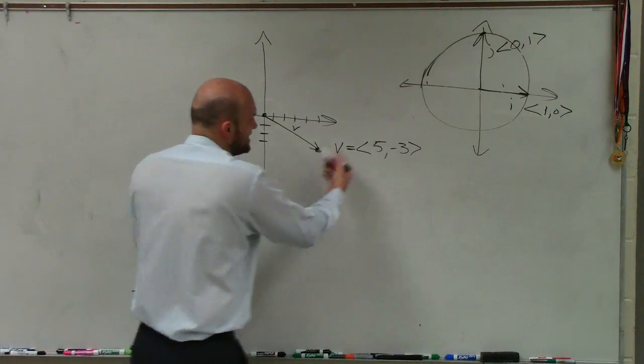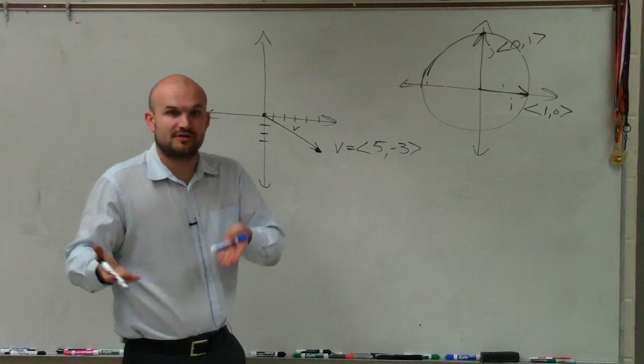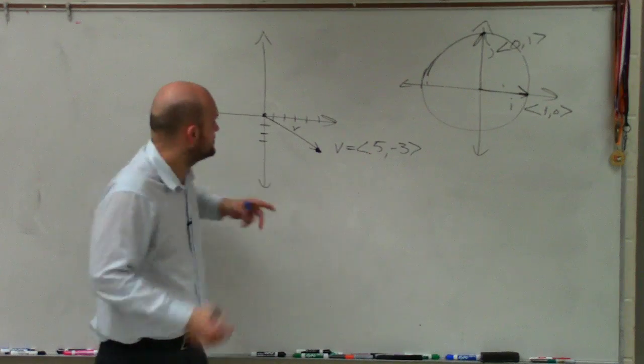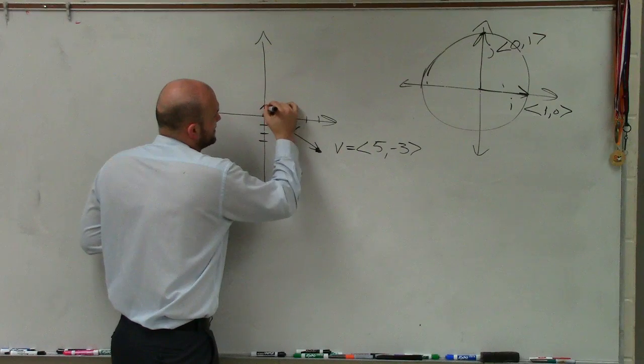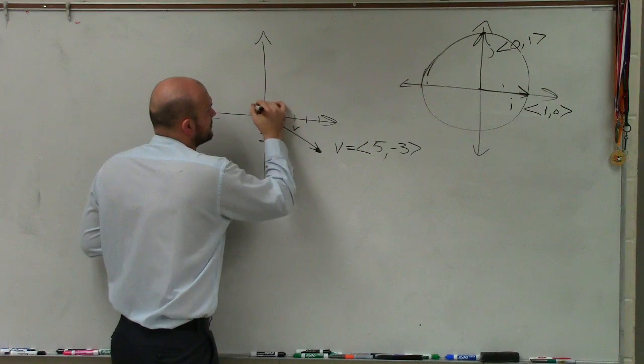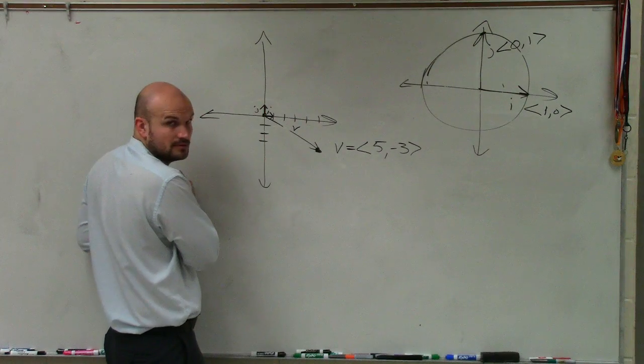So another way that we can label this vector v is the sum of our unit vectors. So v is 5, so what that really means if you look at the unit vectors, right? So here's our two unit vectors, that's j, and here's i. Correct? OK.